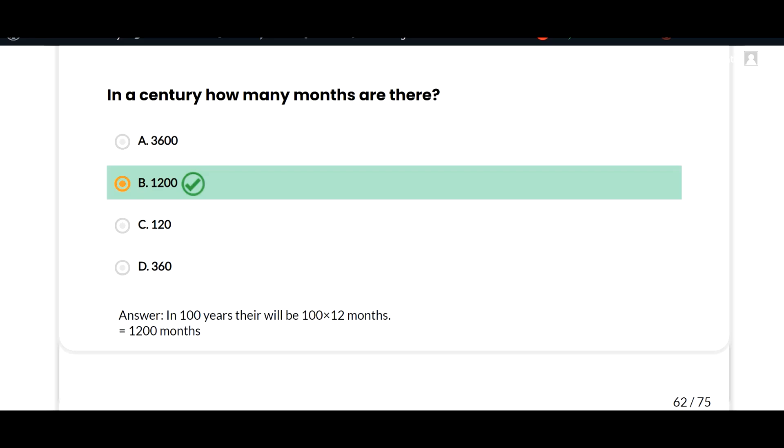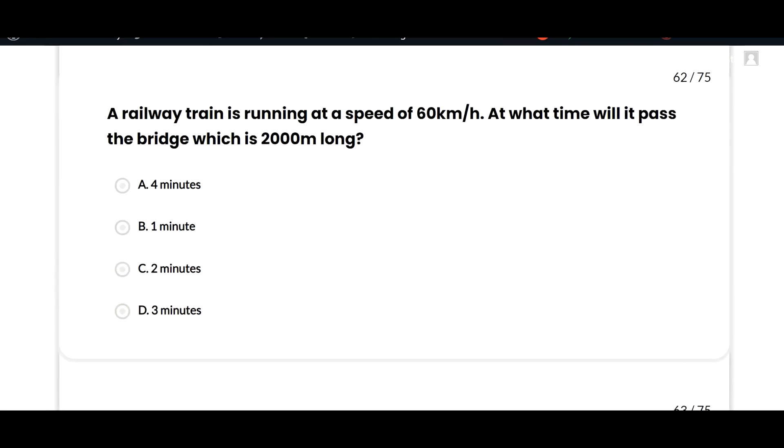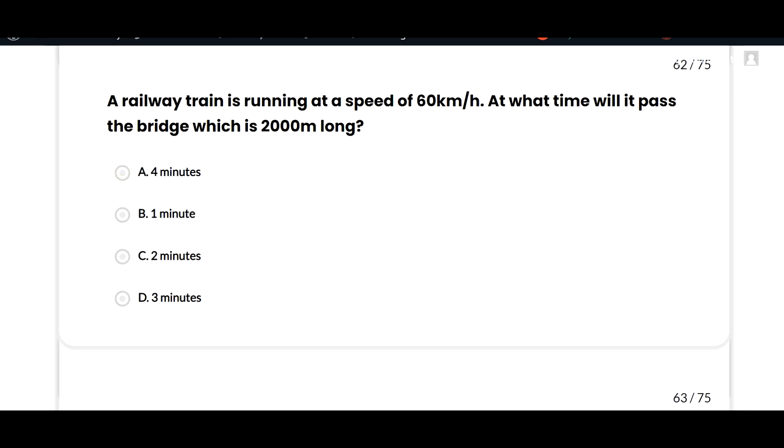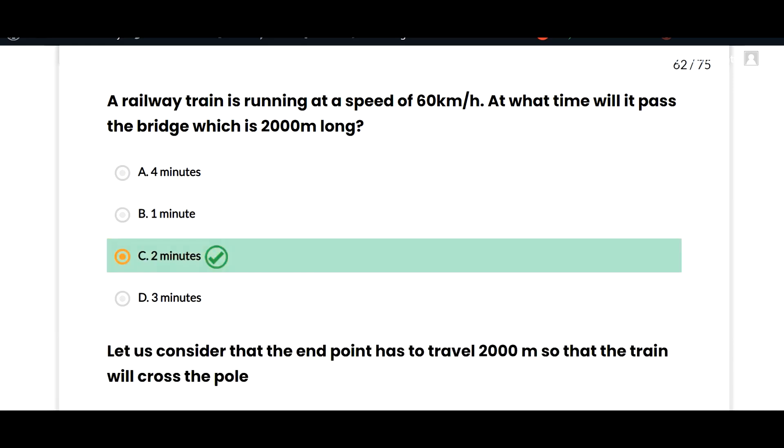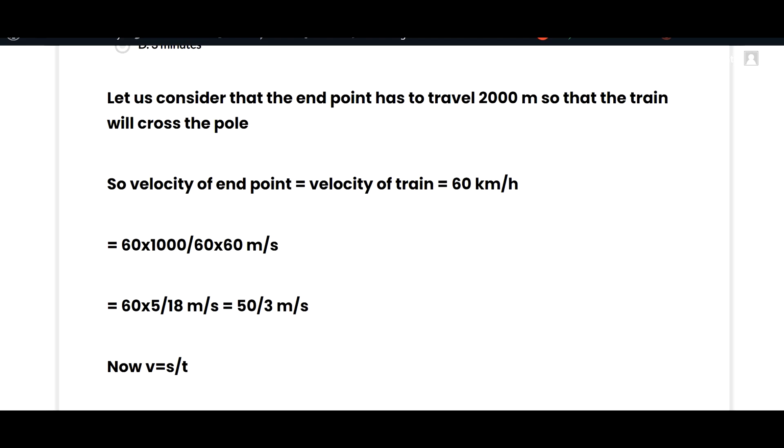The next question is: A railway train is running at a speed of 60 kilometers per hour. At what time will it pass the bridge which is 2000 meters long? The correct option is 2 minutes. Let's solve the question. Let us consider that the endpoint has to travel 2000 meters so that the train will cross the bridge.